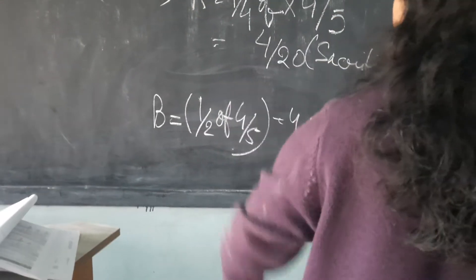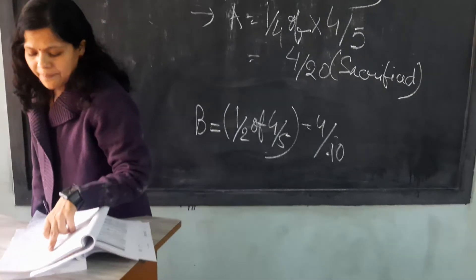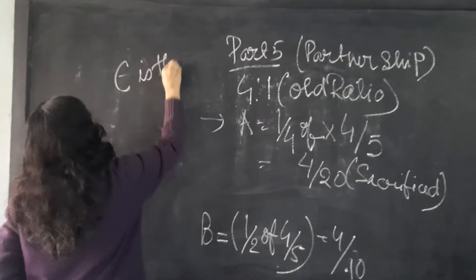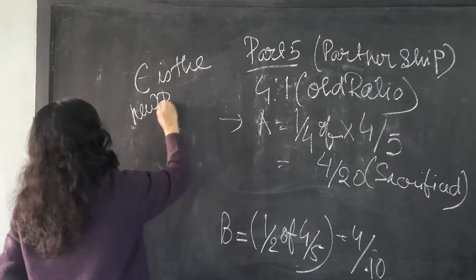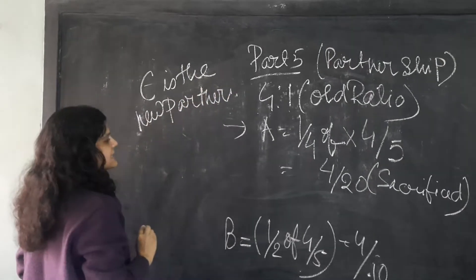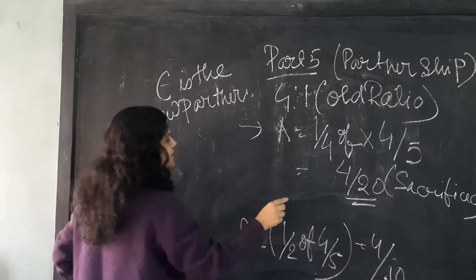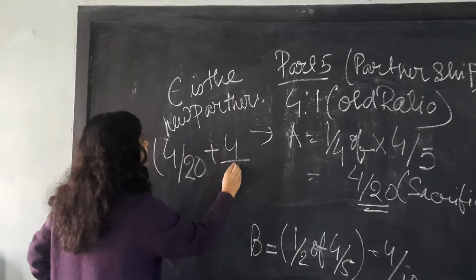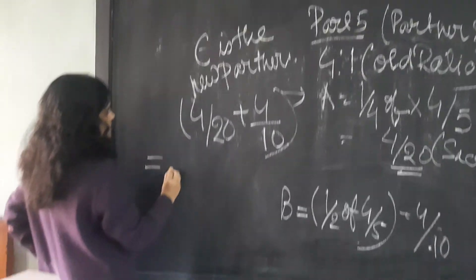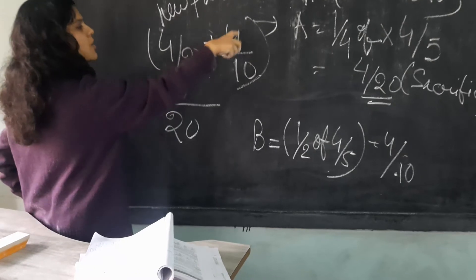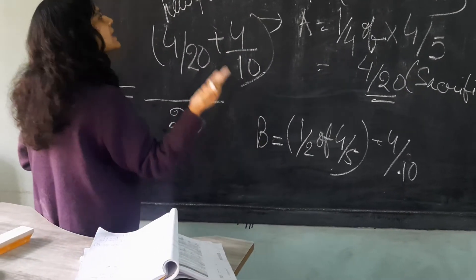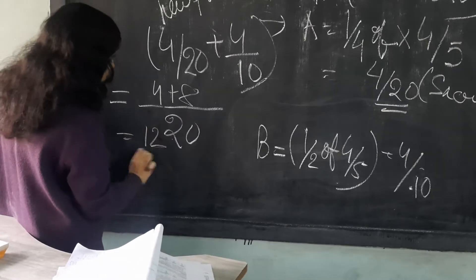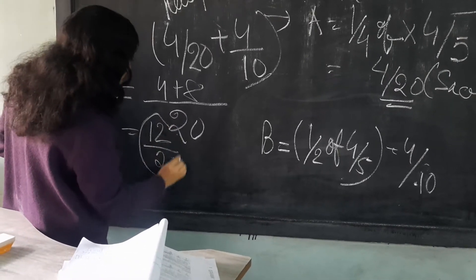This is the condition. Now, what we have to do? In favour of C. Who is C? C is the new partner. How much has A sacrificed? 4 by 20. How much has B sacrificed? 4 by 10. So what is the joint one? 4 by 20 plus 4 by 10. So how much does C share? If I match, C's share comes to 12 by 20.